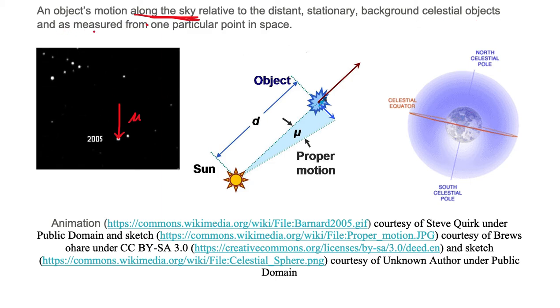Proper motion is measured from one particular point in space. Let's take a look at the sketch in the middle. The measurement point is from the Sun. We want to find the distance d to the particular celestial object, and we're going to label that d.